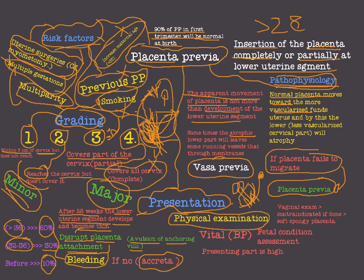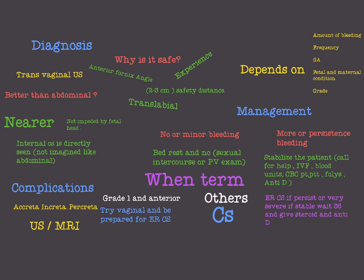In physical examination, the most important things are vital signs and blood pressure assessment. The presenting part is usually high in placenta previa — a high presenting part is one of the signs. You must assess fetal condition. Importantly, vaginal examination is contraindicated in placenta previa because it will provoke huge bleeding and a shock state. If done accidentally, you will find soft tissue — that is the placenta.